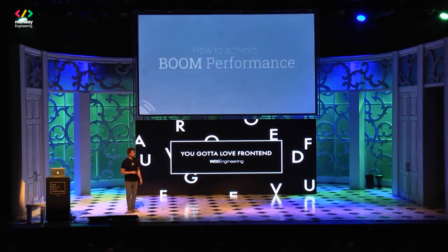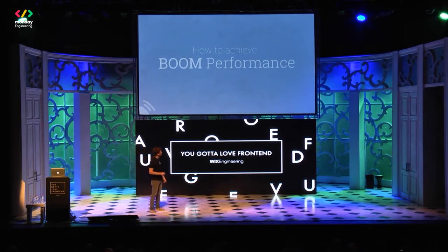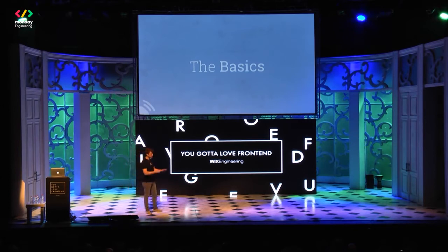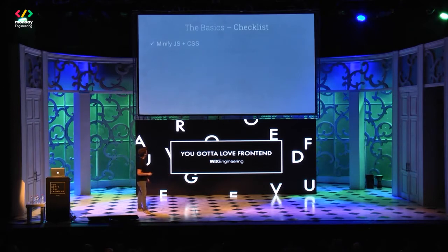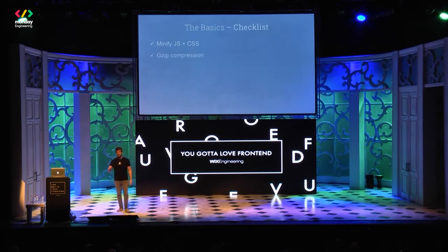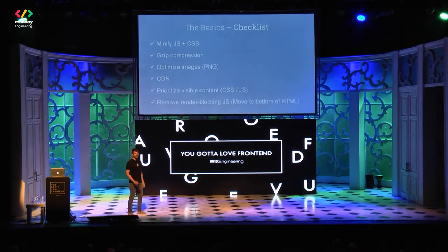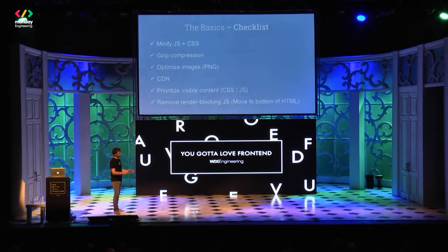Now we know what good performance is and why it's important — let's see how we can achieve it. I'll start with the basics. I'm not going to focus on these too long since you guys are pros, just to make sure we're all on the same page. We need the general checklist: use CSS, use Gzip compression, optimize images, use a CDN — obviously if you don't use a CDN you're in the wrong profession. Prioritize visible content, remove render-blocking JavaScript, move JS to the bottom of the HTML — anything that prevents the page from rendering.